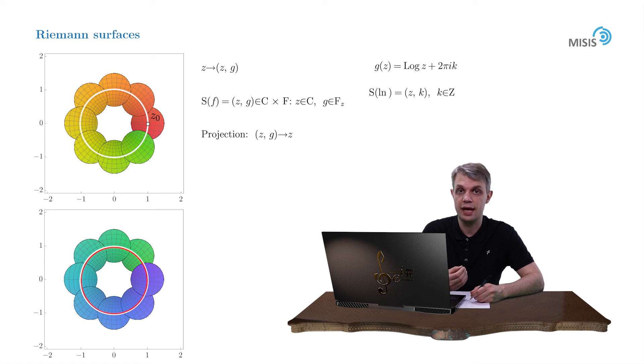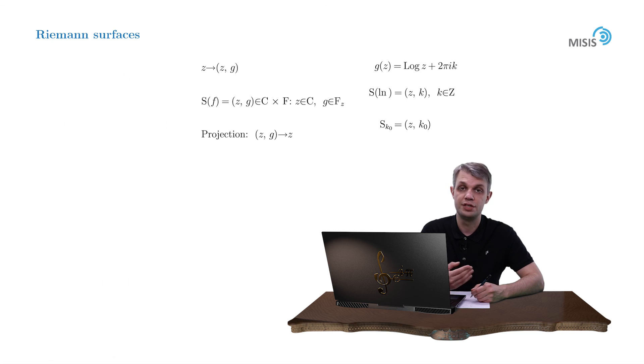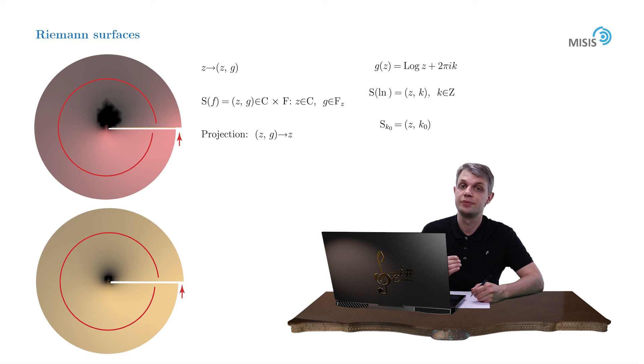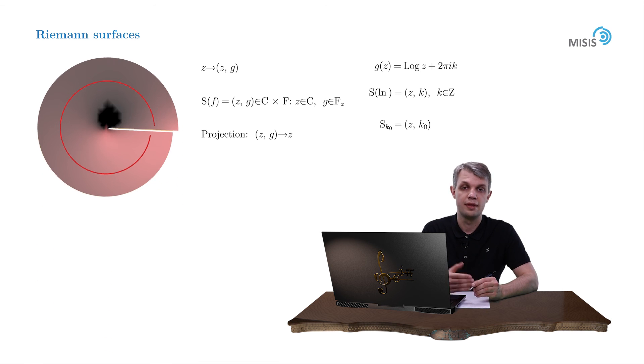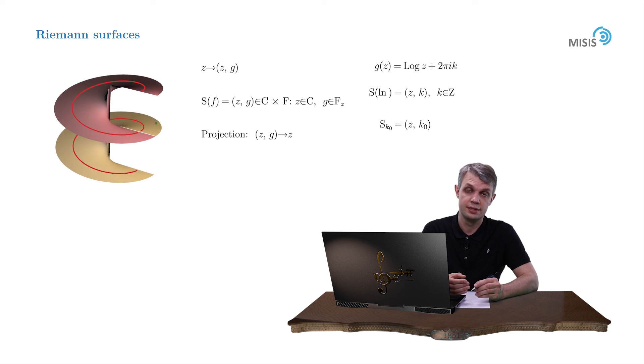All points (z, k) with fixed k form a sheet, sk. Every sheet sk is a copy of a punctured complex plane slid along some line, which allows to connect two adjacent sheets. These connection lines on individual sheets denote the points where the coordinate g or the pair (z, g) switches between its discrete values.